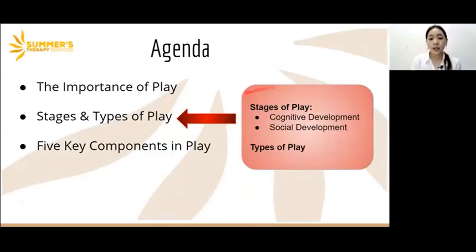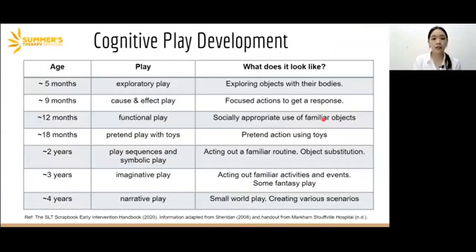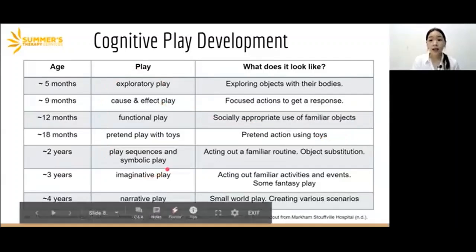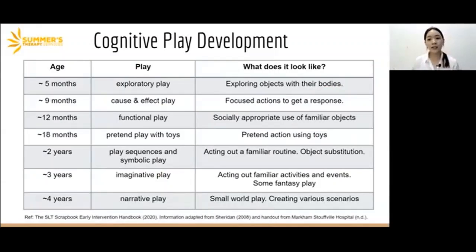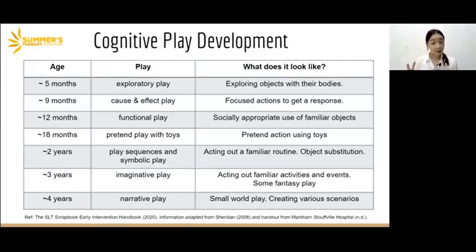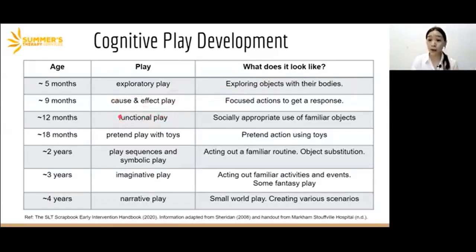Let's look at the play stages, starting with cognitive development. This table shows the different stages of play that children are expected to develop at certain ages. Each child develops differently — everyone is unique and develops at their own pace. This is just a rough indication of when most children demonstrate these skills. Our role is to figure out where they are and aim to develop the next stage in play development. So for example, if your child is at cause-and-effect play, you might want to work on the next developmental stage, which is functional play.